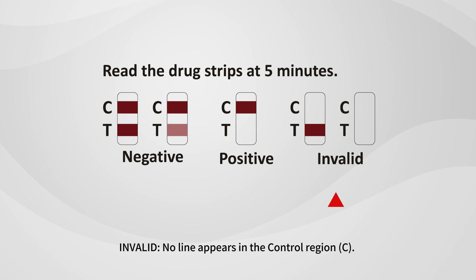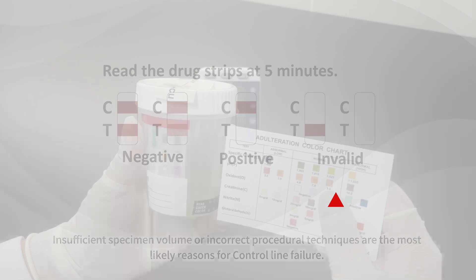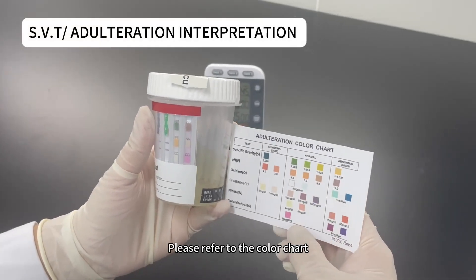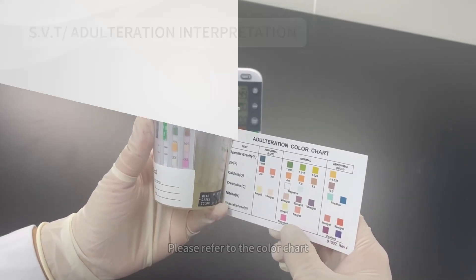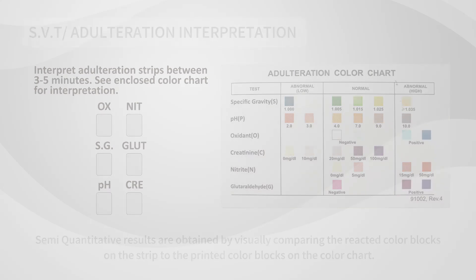For an invalid result, no line appears in the control region (C). Insufficient specimen volume or incorrect procedural techniques are the most likely reasons for control line failure. Adulteration interpretation: please refer to the color chart. Semi-quantitative results are obtained by visually comparing the reacted color blocks on the strip to the printed color blocks on the color chart.